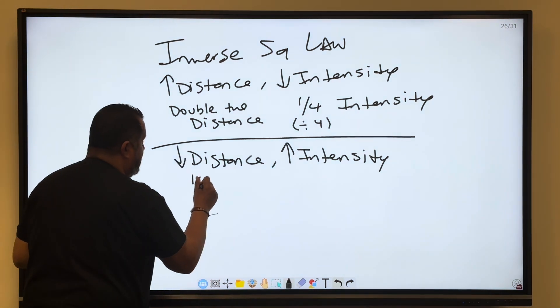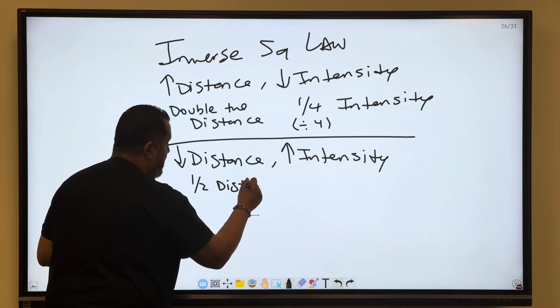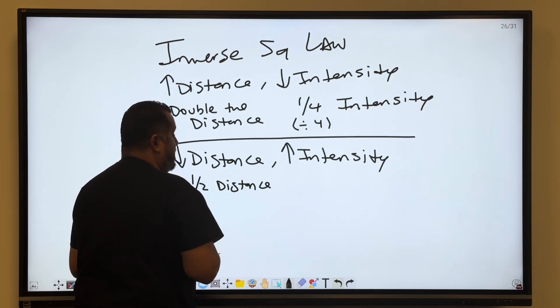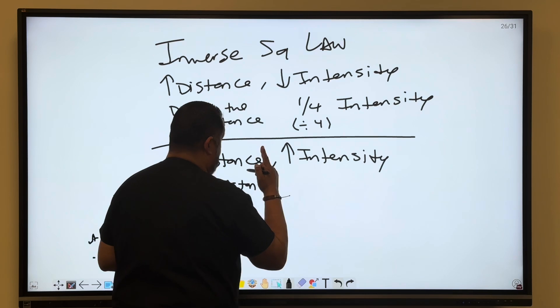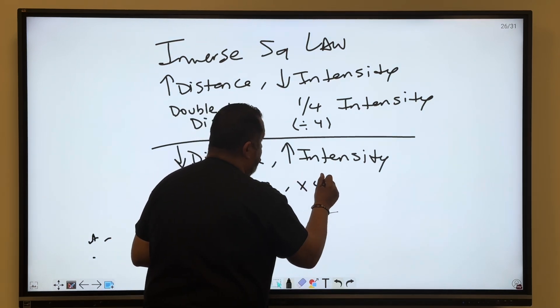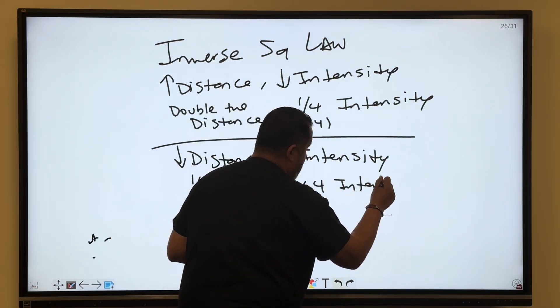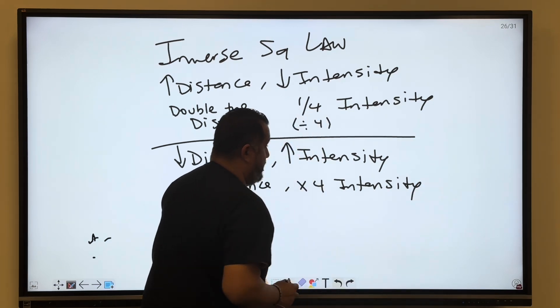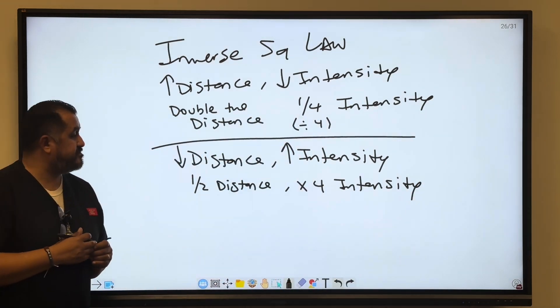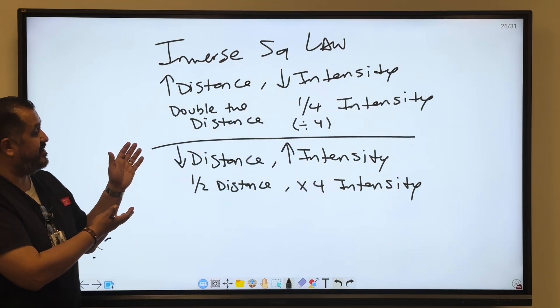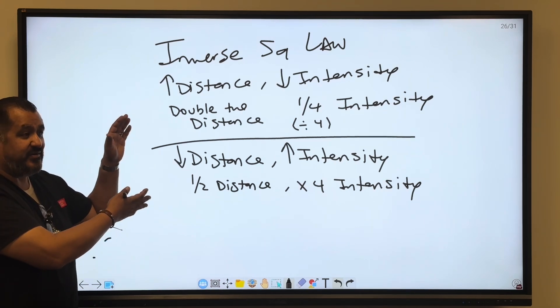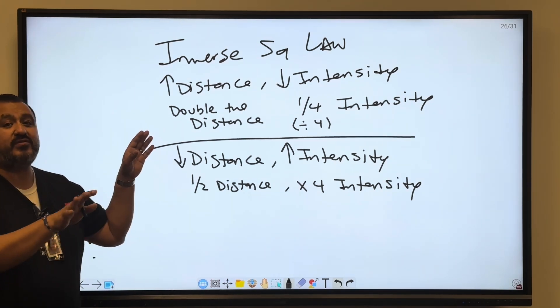As I bring the distance away from the board with the flashlight, your intensity is going to go down but the field increases. So if you cut the distance in half, it's going to go up, so it's going to be times four the intensity. This here is the fundamentals of understanding the inverse square law before we even go to the formula.